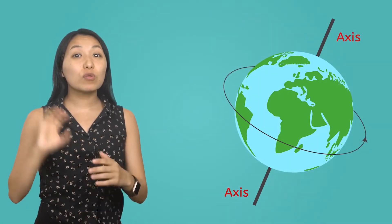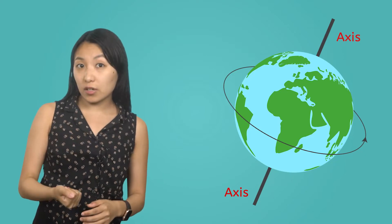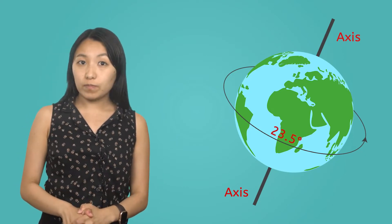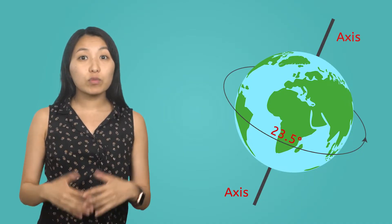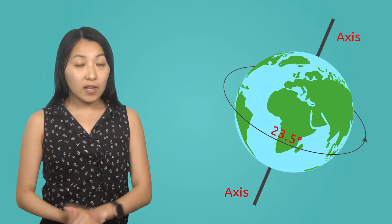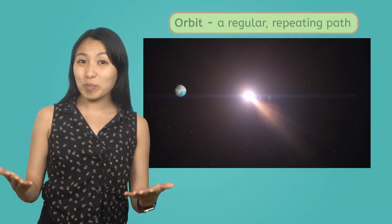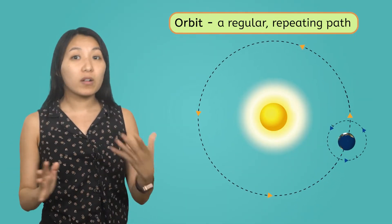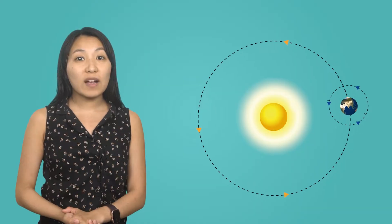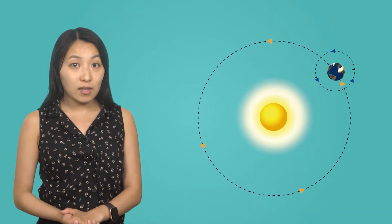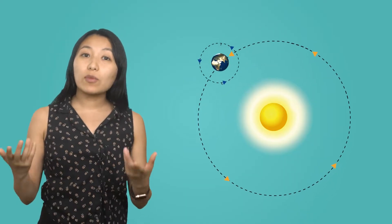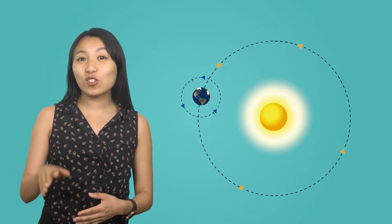Not only is Earth rotating on its axis, it's tilted on it at about a 23.5 degree angle. And while Earth rotates on its tilted axis, it also revolves around the Sun. This means the Earth travels around the Sun on a regular repeating path called an orbit. As Earth travels along this path, its tilt causes different parts of Earth to receive more direct sunlight at different times. This tilt, in combination with Earth's orbit, is why we experience different seasons throughout the year.